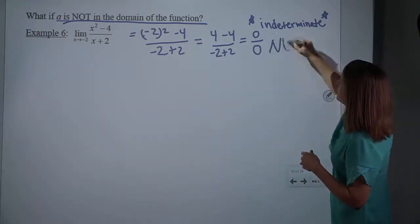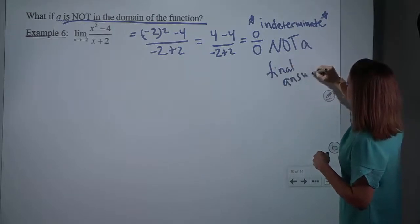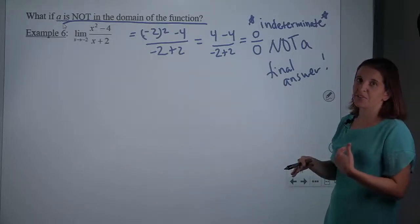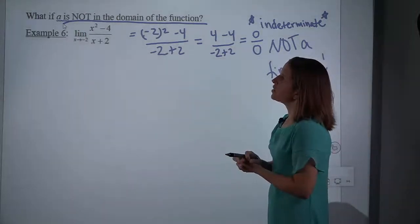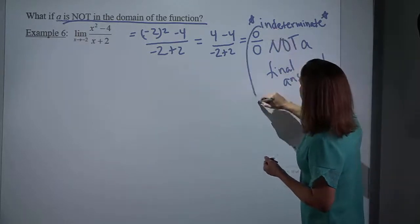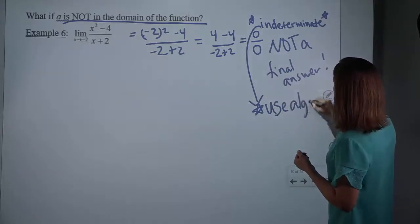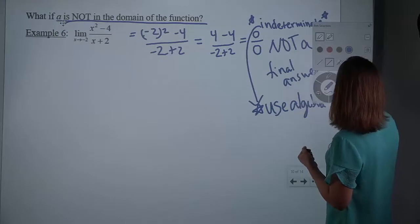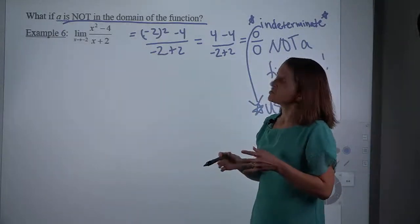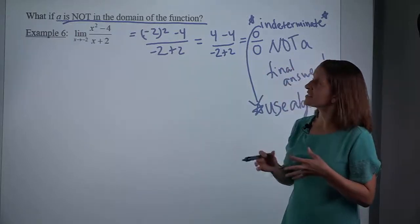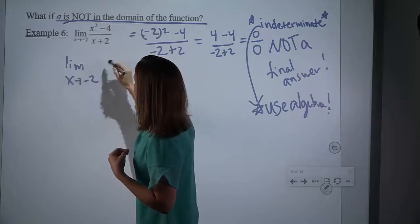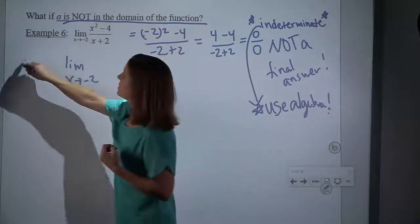That indeterminate form is going to be an indicator to us that we should use algebra. It depends on the problem what algebra you're going to use. When you look at this and you channel your algebra class, what's just jumping out at you? And if I look at that, it's begging me to factor it. So what kind of factoring can we do? The top factors as a difference of squares — there's a perfect square in the front and a perfect square in the back. So we get two sets of parentheses: x plus 2 times x minus 2. And then our denominator was x plus 2.